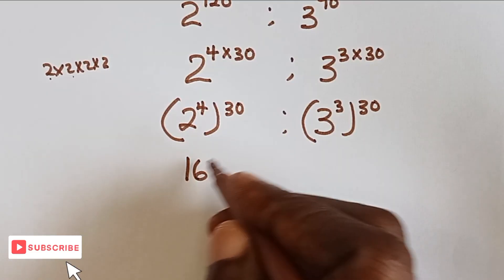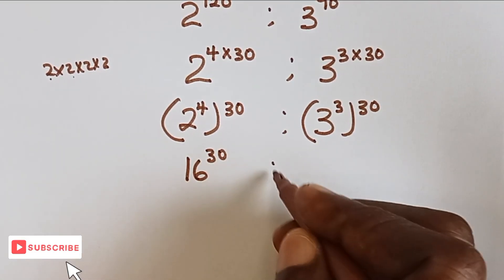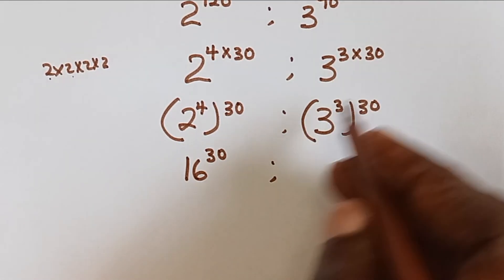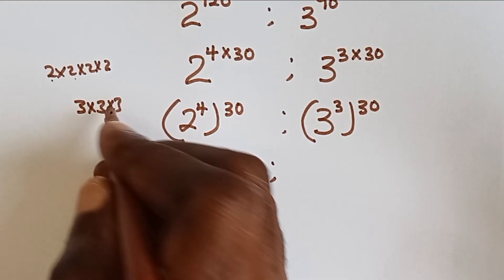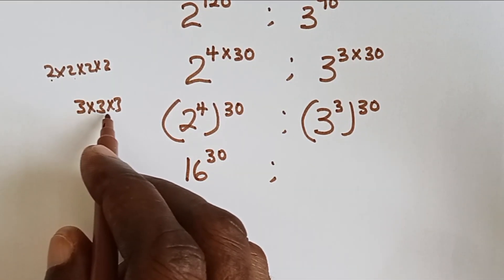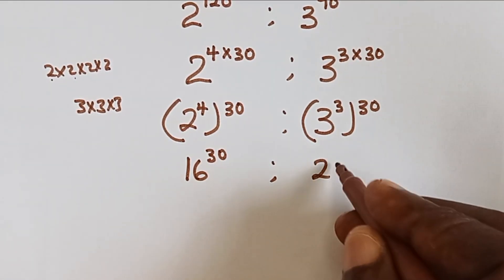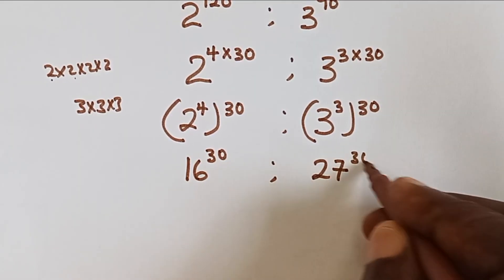This gives 16 raised power 30 and we have this to be 3 raised power 3. That means it's 3 times 3 times 3. 3 times 3 is 9, 9 times 3 is 27. So this gives 27 raised power 30.